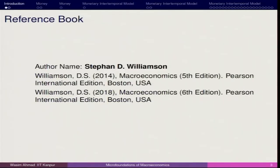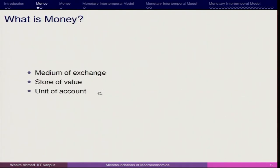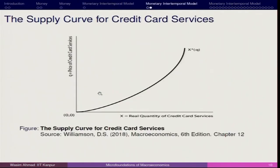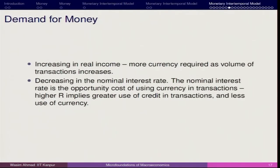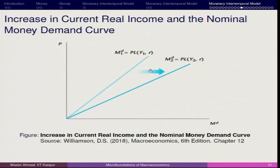Now we will take this forward. For this particular lecture the reference remains the same — Williamson — and we are talking about how we can determine the demand. We are discussing the rightward shift: if I am here I have this much demand, but the moment you have a rightward shift, then you see a higher increase in money demand.